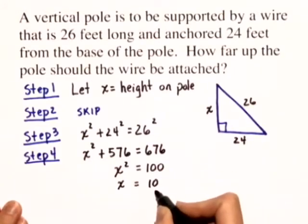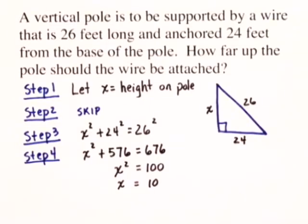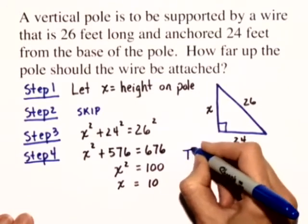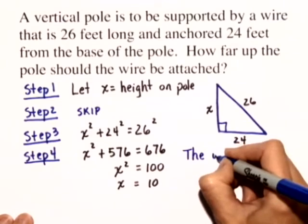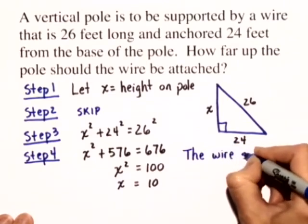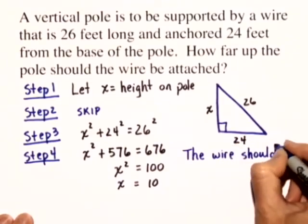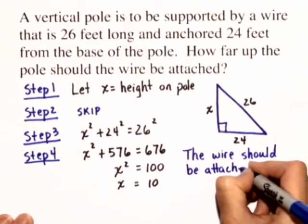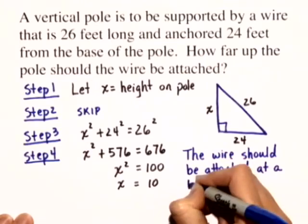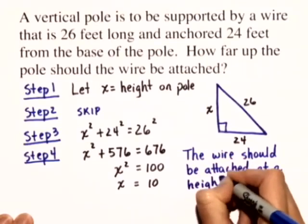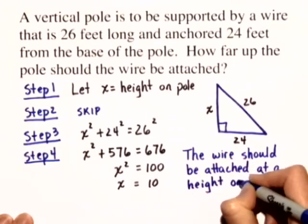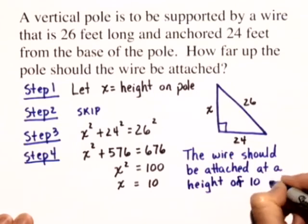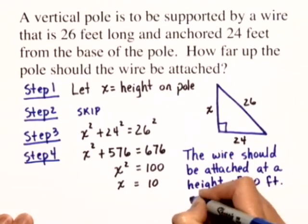We'll only take the positive square root because X represents a distance. So we're ready to state our answer now. The answer is that the wire should be attached at a height of 10 feet on the pole.